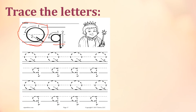You need to trace it slowly. The first step - it's like you make a circle, and then after that go here, like that. Okay, so this is for our big capital letter Q.